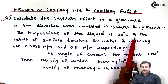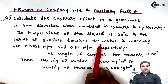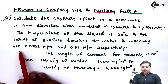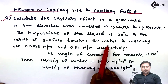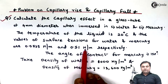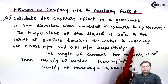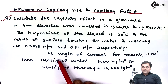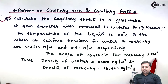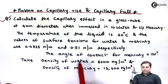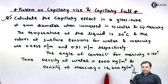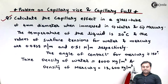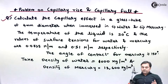The values of surface tension for water and mercury are 0.035 Newton per meter and 0.51 Newton per meter respectively. The angle of contact for mercury is 130 degrees. Take density of water as 1000 kg per meter cube and density of mercury as 13600 kg per meter cube. This is the given question.